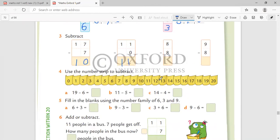Use the number strip. Again, I'm only going to do one. You do the remainder. 19 minus 6. We move back. Count back. Remember, subtract one, two, three, four, five, six. Answer is one, three, thirteen. Similarly, you will do the next two.